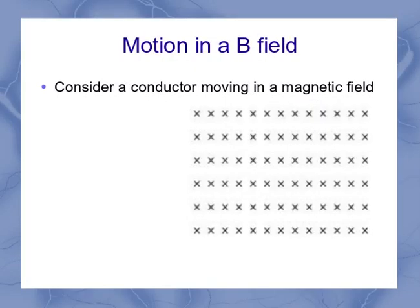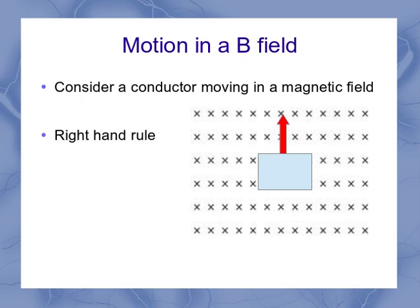Now to help us see the directions a little better, I'm going to go ahead and use a magnetic field that's pointed into the page, represented by our little x's here. So I put my conductor in this field, and I move it perpendicular to the field. In this case, I'm going to move it upwards. Well, that's going to create a force, and we can figure out the direction of the force by the right-hand rule.